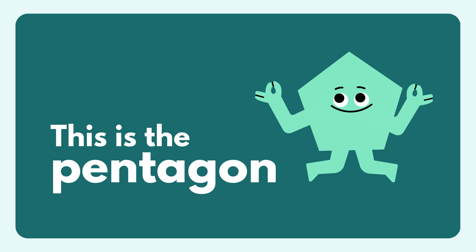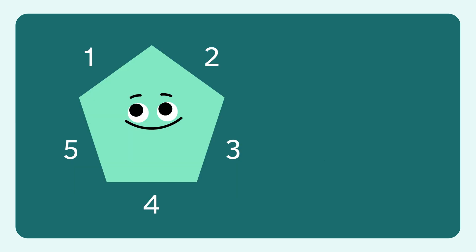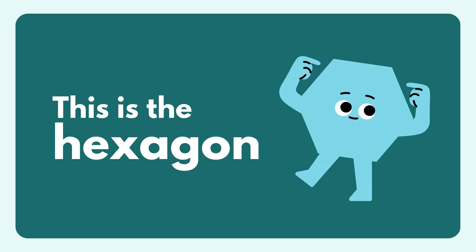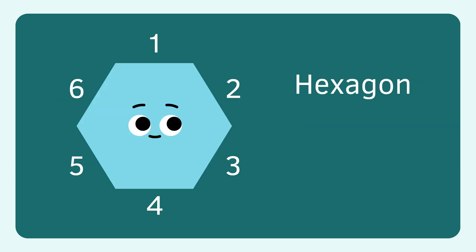Pentagon. Pentagon has five sides, five vertices, and five edges. Hexagon. Hexagon has six sides.